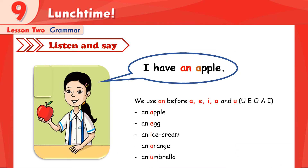Look at picture 3: I have an apple. Câu này có nghĩa là tôi có một quả táo. Điều chúng ta cần chú ý ở đây là chúng ta sẽ sử dụng 'an' trước những từ bắt đầu bằng các chữ cái như a, e, i, o, u. We use 'an' before a, e, i, o, u.